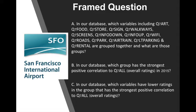Before we analyze the dataset, we have come up with three framed questions. First, in our database, which variables — including Q7 Art, Q7 Food, Q7 Store, Q7 Sign, Q7 Walkways, Q7 Screens, Q7 Info Down, Q7 Info Up, Q7 Wi-Fi, Q7 Roads, Q7 Park, Q7 Airstream, Q7 Long-Term Parking, Q7 Rental, Q7 Overall, and Q7 School — are grouped together, and what are those groups?